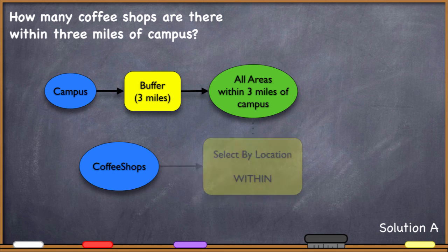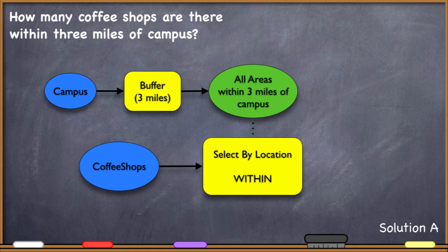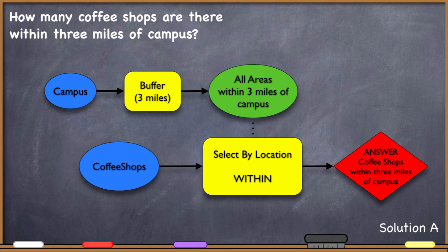Then what's the next step? We take coffee shops and run a select by location, using 'within' as our parameter — selecting all coffee shops that fall within that buffer area file. We have points for all the coffee shops around the city and we want to select those that are within the buffer. The expected output is the answer: all coffee shops within three miles of campus.